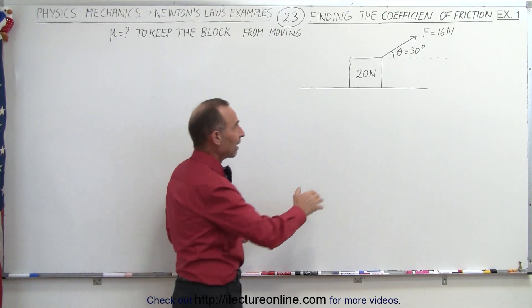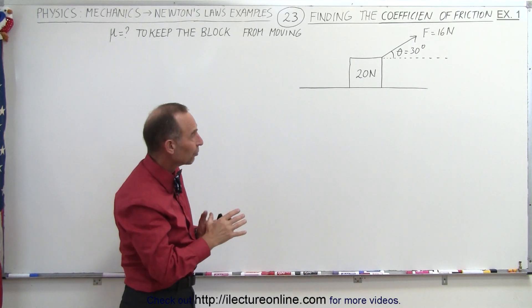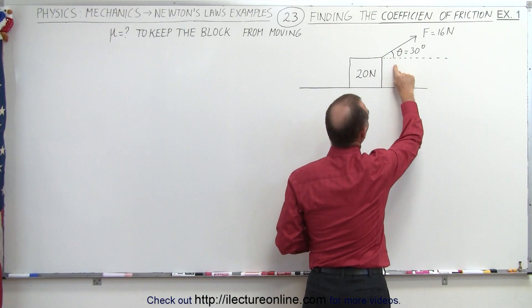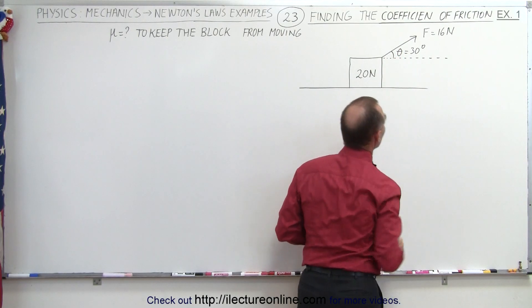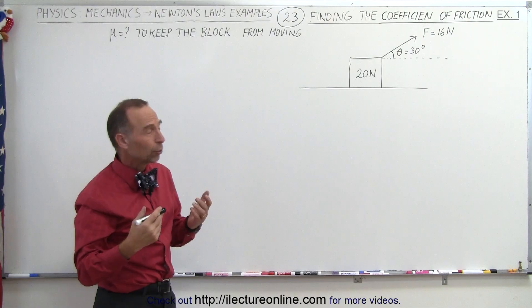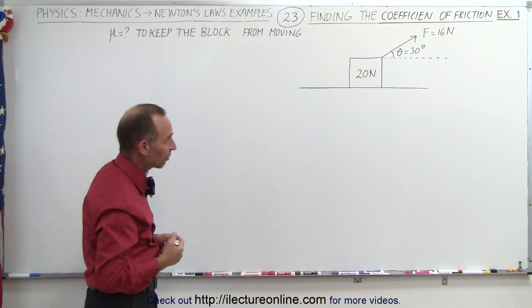What we have here is a 20 newton block. We're not given the mass, we're given the weight of the block. We know that a force is pulling on the block at an angle of 30 degrees above the horizontal. So what is the coefficient of static friction required to keep the block from moving?